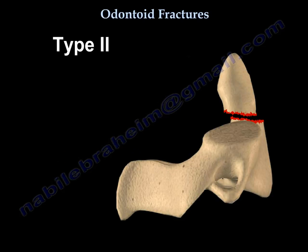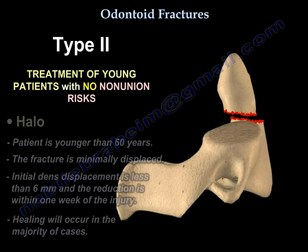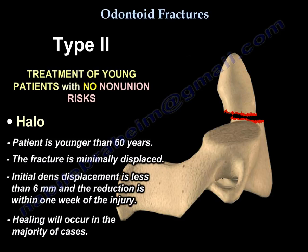For a Type 2 fracture in a young patient with no non-union risks, you're going to use a halo. The patient is younger than the age of 60, the fracture is minimally displaced, the initial dense displacement is less than 6 mm, and the reduction is within one week of the injury. Healing will occur in the majority of cases.